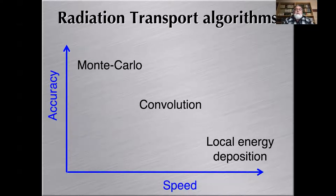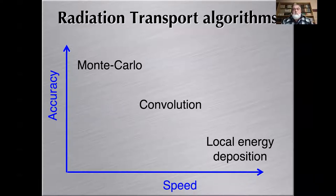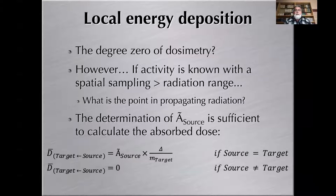There are three global radiation transport algorithms that can be implemented to compute absorbed doses. The first is local energy deposition — very quick, but only possible if you assume all emitted energy is absorbed locally. The second is convolution, which is mostly for homogeneous medium. The third is Monte Carlo, which is the gold standard because it provides an exact solution for absorbed dose calculation in heterogeneous media — but the penalty is computation speed, as Monte Carlo codes take a long time to run.